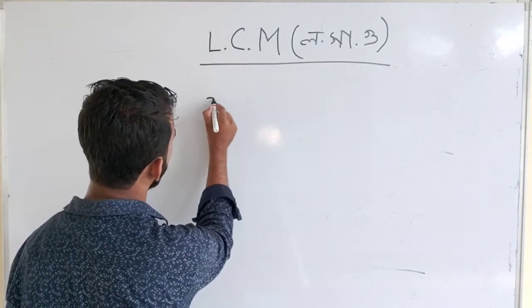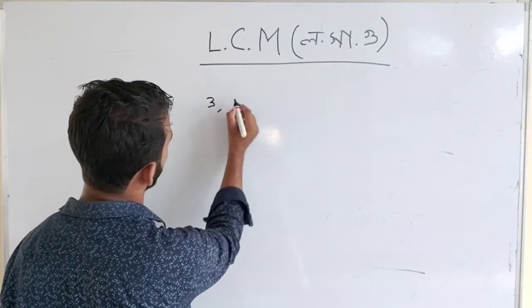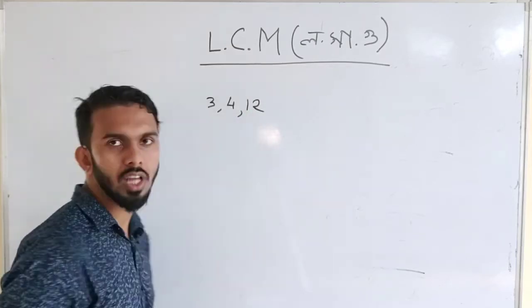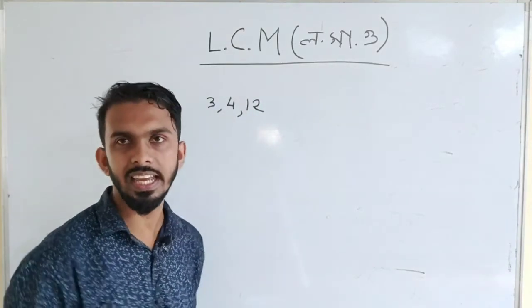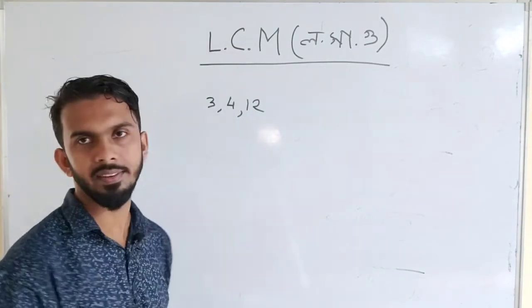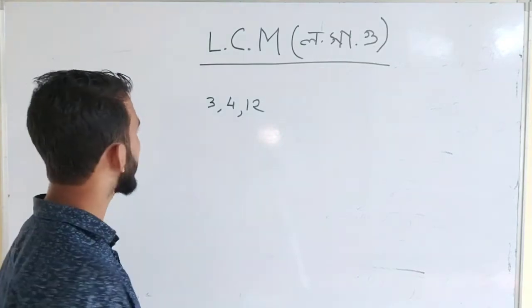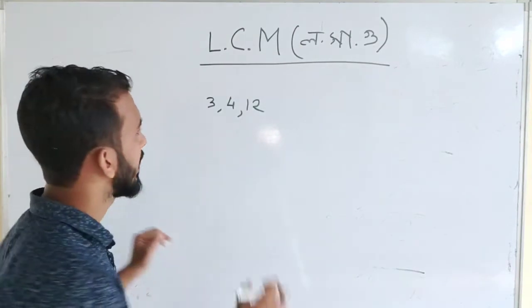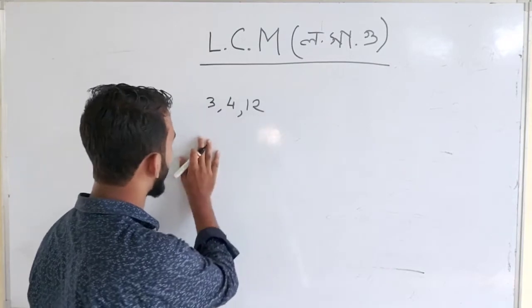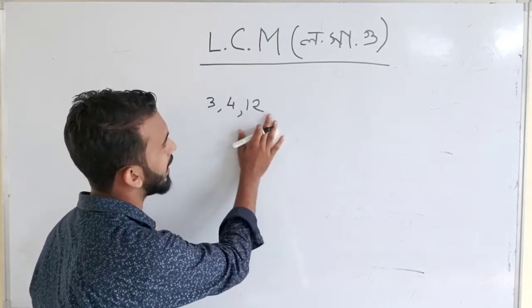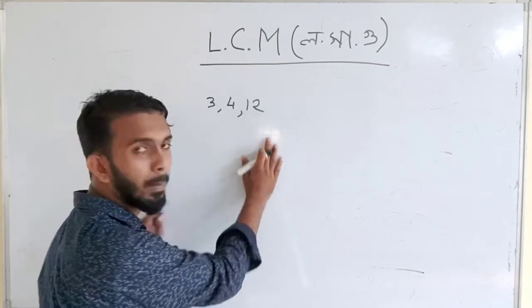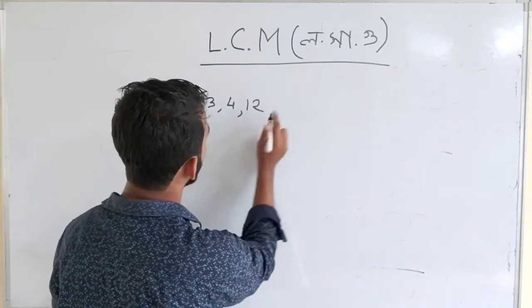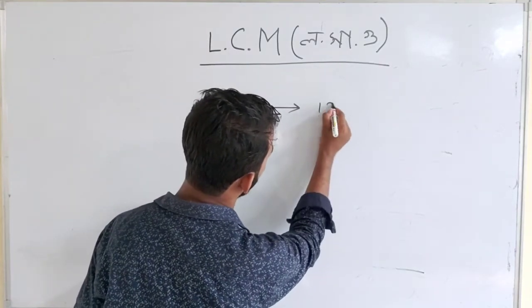For example, the numbers 3, 4, and 12. LCM means lowest common multiple. We have 3, 4, 12 — the LCM is 12.